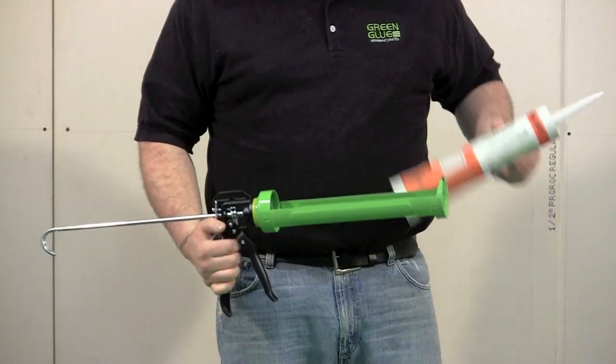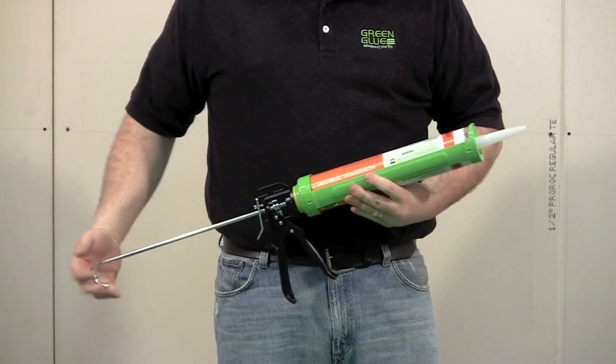When your nozzle is properly cut, place the tube in a standard 28-ounce caulk gun to prepare for installation.